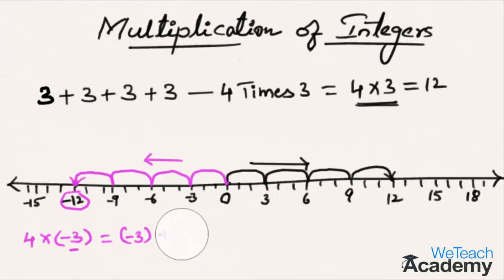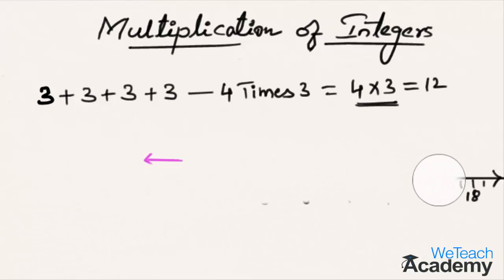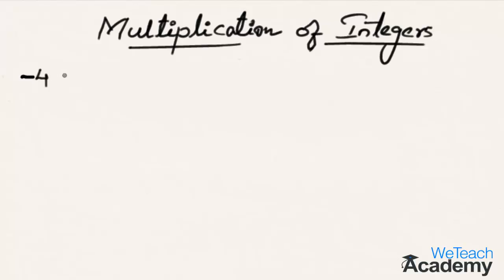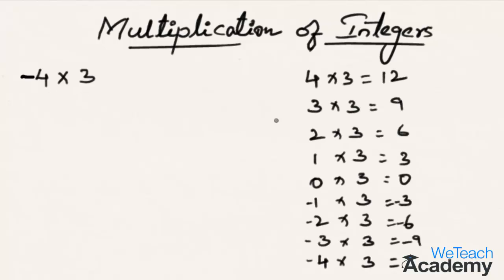Now what would be minus 4 times 3, that is minus 4 multiplied with 3? Let us study the pattern given on the right side. In the pattern, as the multiplier decreases by 1, the product also decreases by 3.